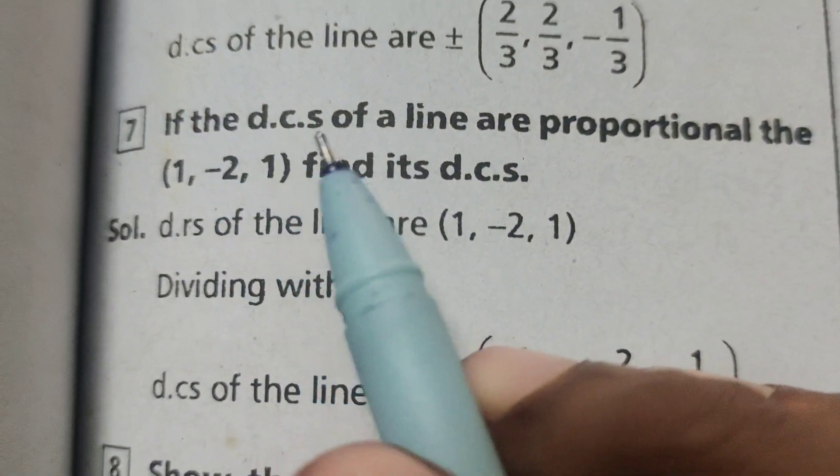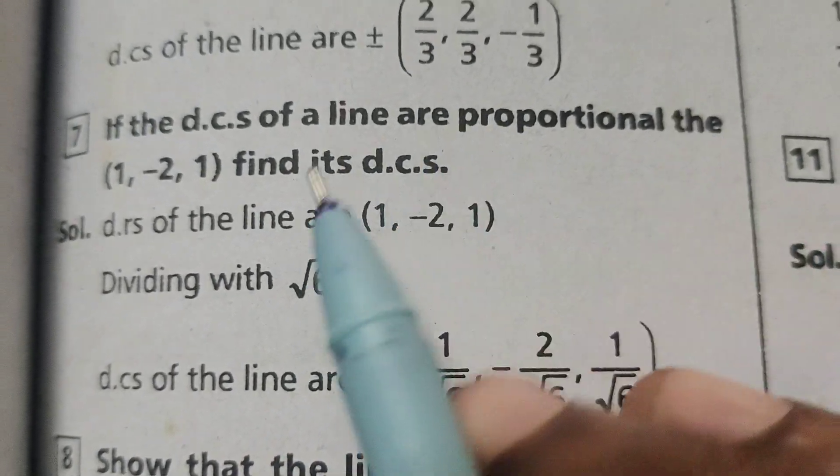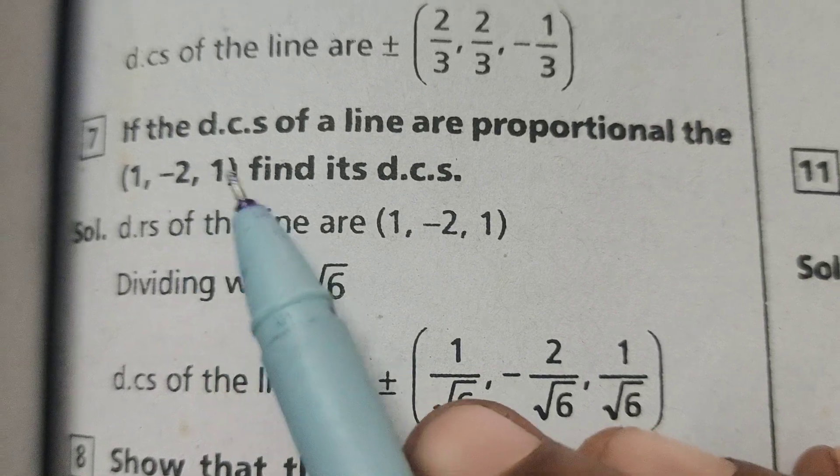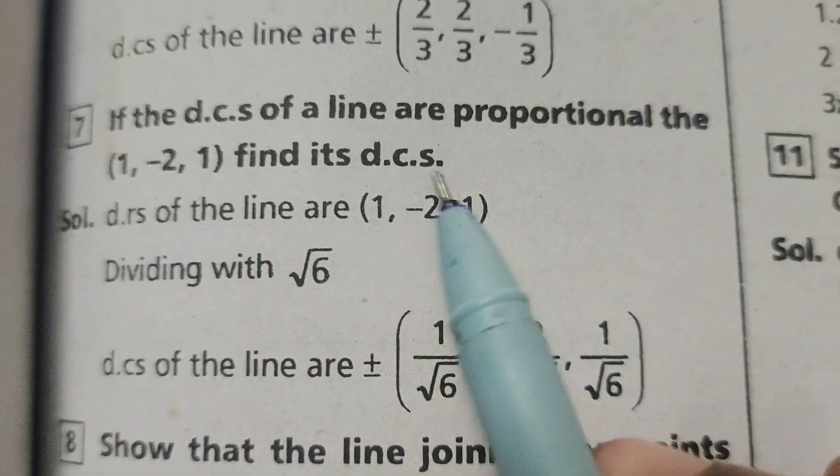today we are going to explain: if the direction cosines of a line are proportional to 1, -2, 1, find its direction cosines.